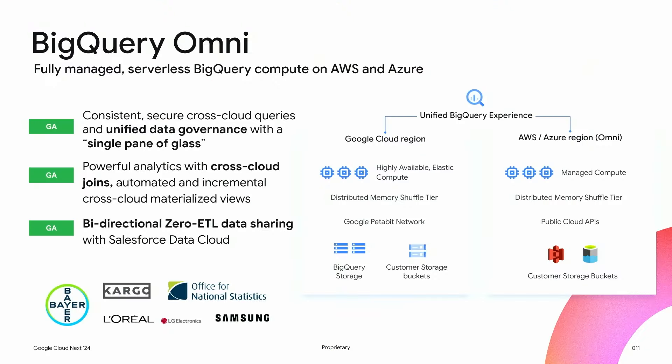BigQuery Omni is a fully managed serverless product — it is BigQuery compute running on AWS and Azure. The compute runs local to your storage, whether that's AWS S3 or Azure Blob storage. With compute running local to the storage, you query the data in place. As a data analyst, you're not moving or replicating data — you're querying in place — making it simpler and cost-effective. That's the single pane of glass, and I'll show some examples.